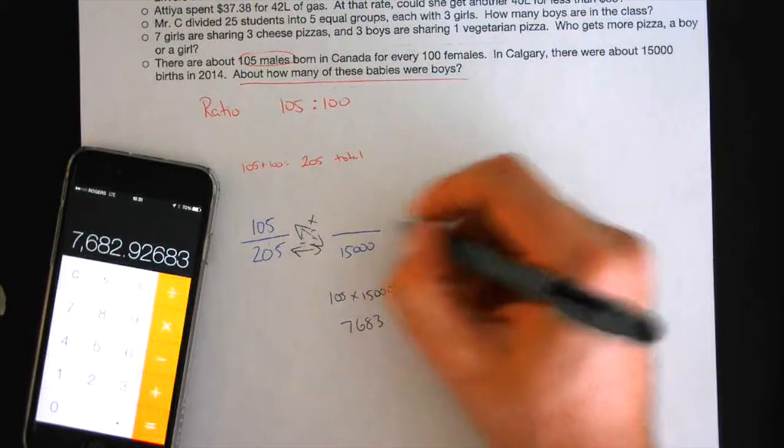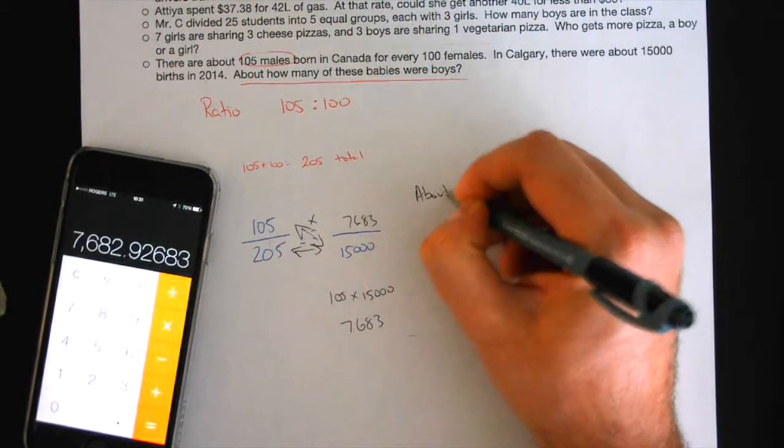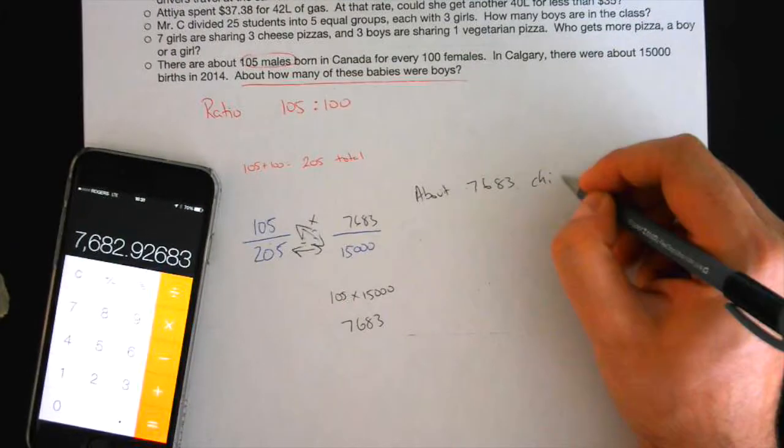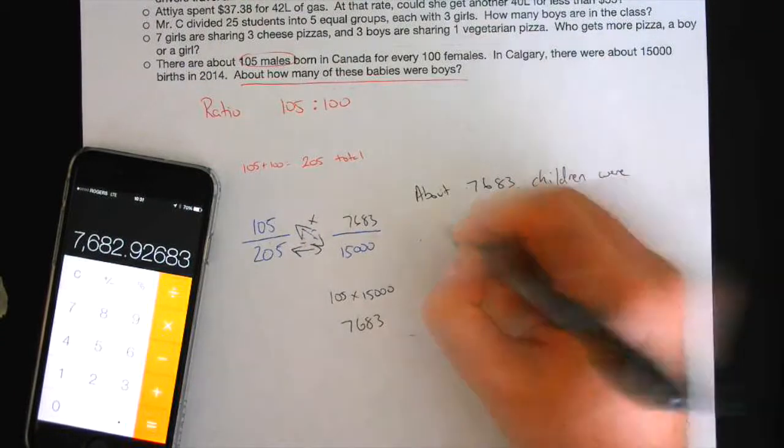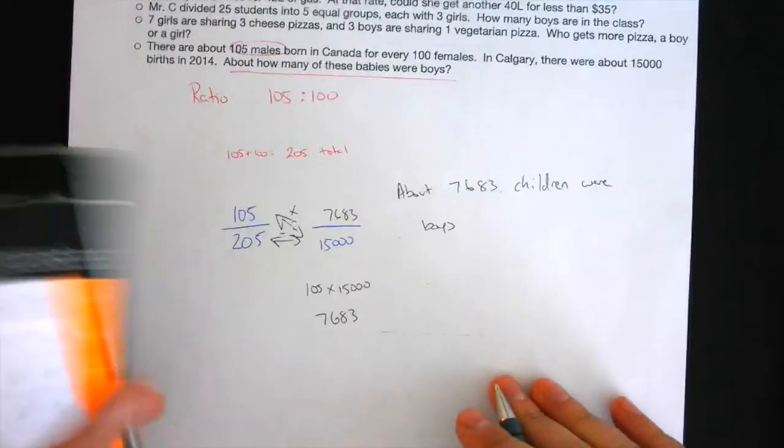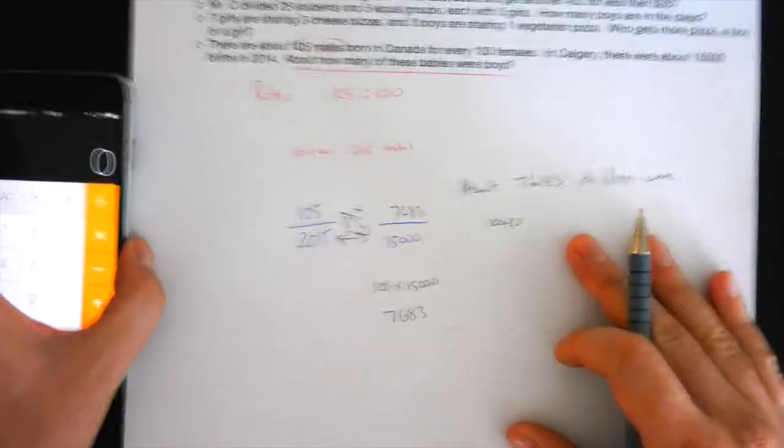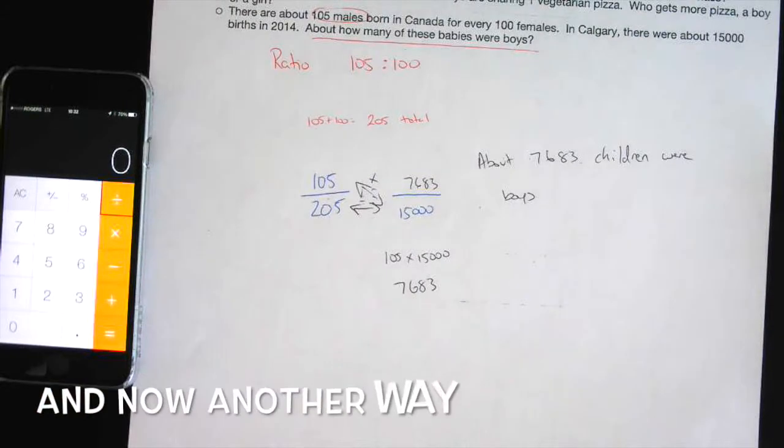Okay? So you could say about 7,683 children were boys. Okay? Is there another way we can do this? Any guesses? Okay. I'm going to show you a little trick. I think you guys might have forgotten this one, or you just simply didn't know how to apply it.